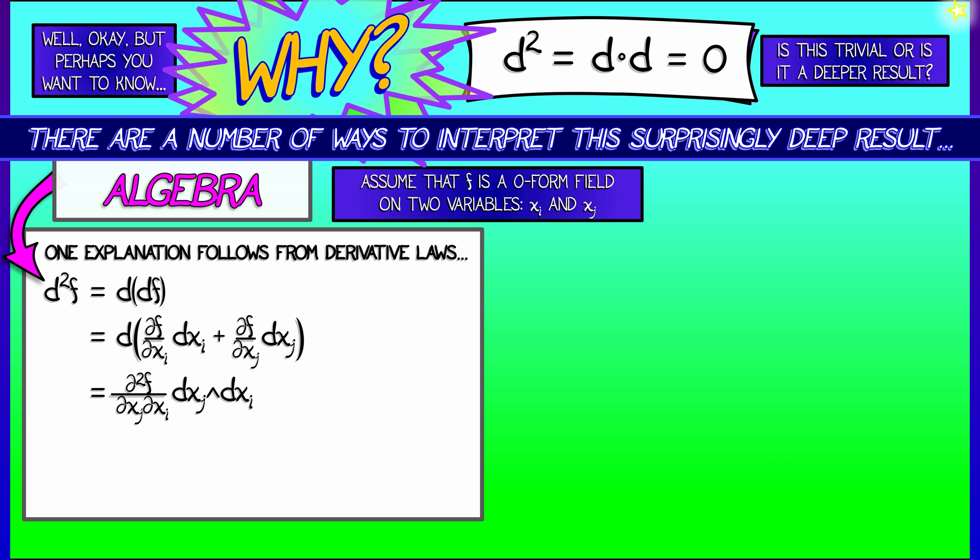Okay, that's the first term. For the second term, we do the same thing, but we get a slightly different result in that we get the second partial in f, partial xi partial xj dxi wedge dxj.